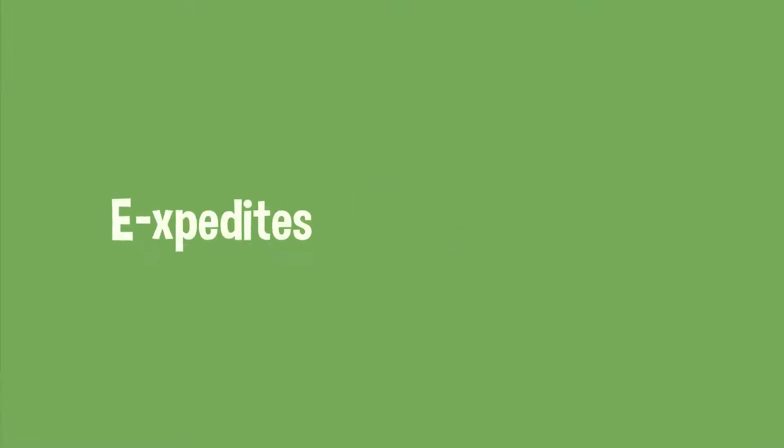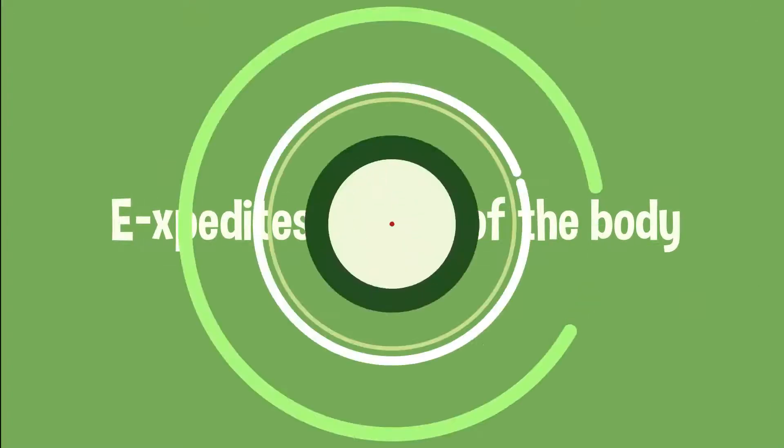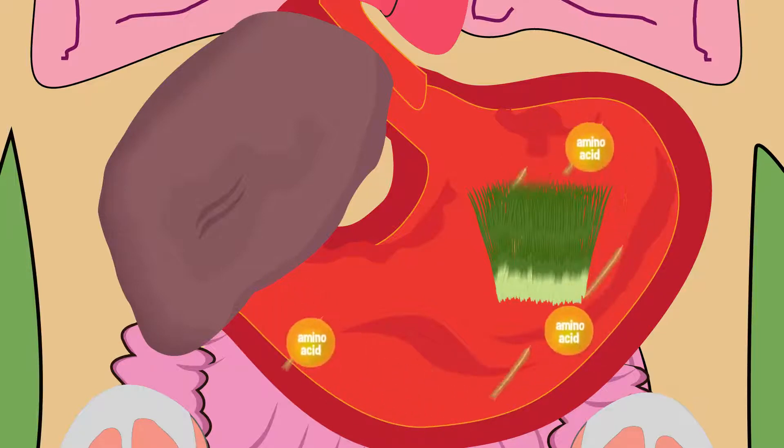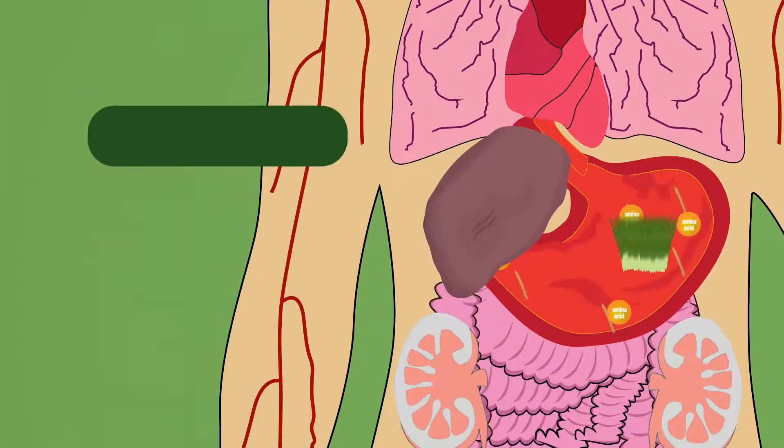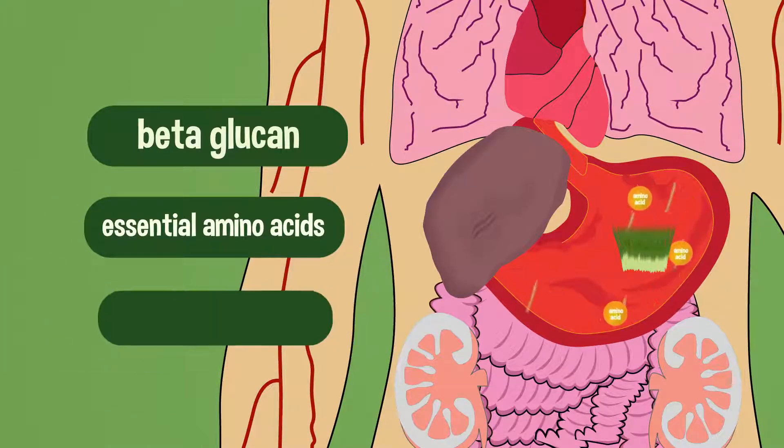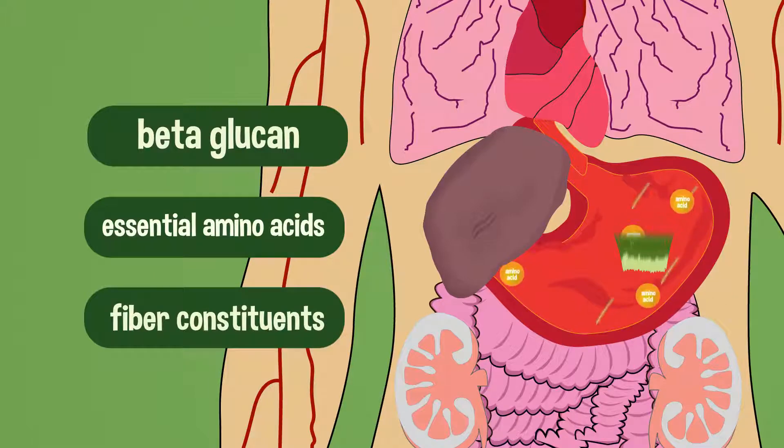E expedites healing of the body. After dissolving barley in the body, there are three very important constituents which are stored in barley products. First is beta-glucan, second is essential amino acids, and third are fiber constituents which accelerate the energy in the body with high resolution.